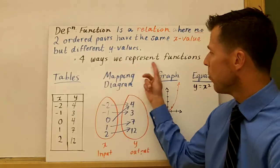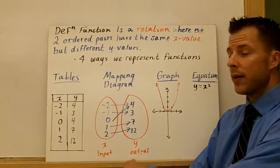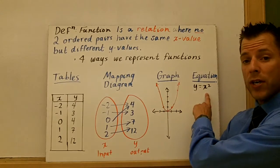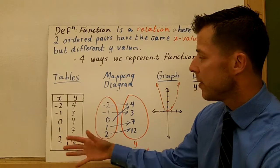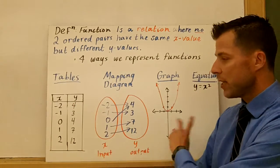So there's four ways we represent functions, four common ways. They are tables, mapping diagrams, the graph, and an equation. So the idea here is I just kind of took a table of values and represented them different ways.